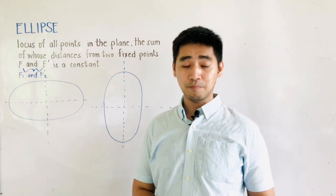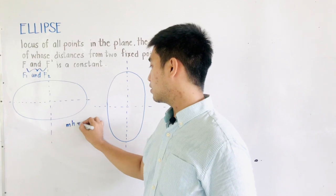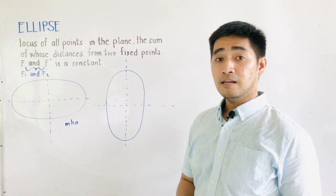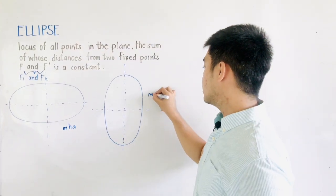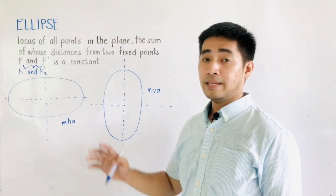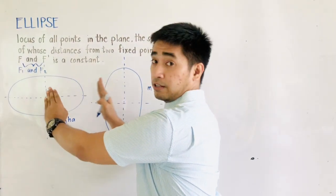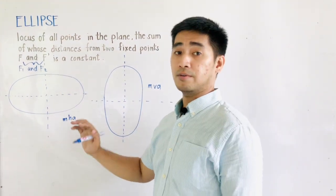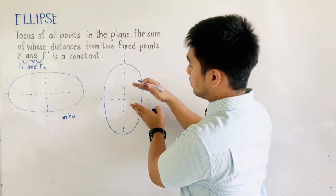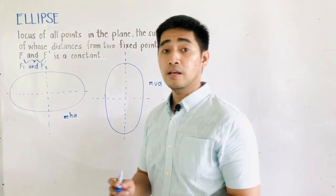We have two types of ellipse. The first type is the horizontal ellipse — I call this the major horizontal axis. The second type is the vertical ellipse — I call this the major vertical axis. For the first one, it uses the X value, so this becomes X squared over A squared. For the second one, since it is for the Y value, this becomes Y squared over A squared. Let's talk about the formula later.